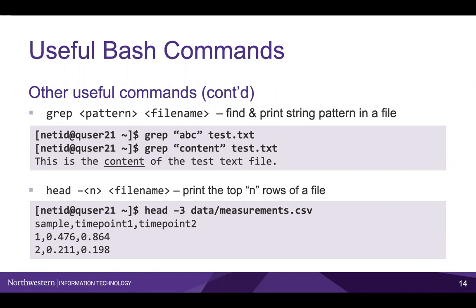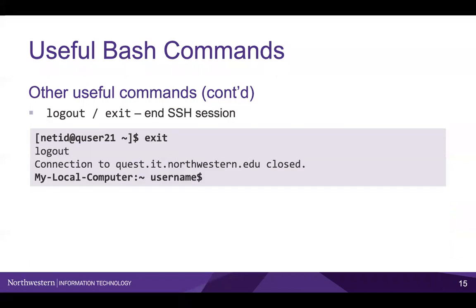The head command prints the first lines of a file. The number of lines is 10 by default. We can also change this by running head -n followed by file name to print the top n lines. In this example, we use head to print the top three rows of the measurements.csv file in the data directory. Once you are all done with your work, you can end the SSH session by entering exit or logout. This will bring you back to your local computer's command prompt.